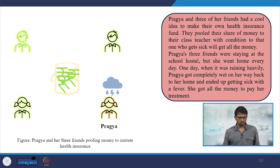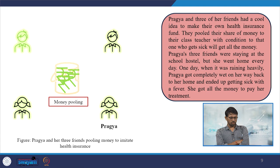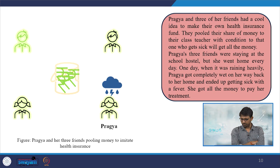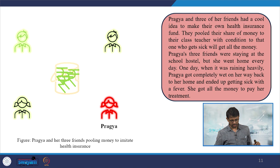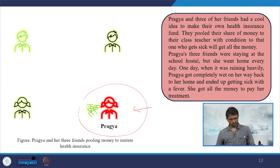Pragya's three friends were staying at the school hostel, but she went home every day. One day when it was raining heavily, Pragya got completely wet on her way home and ended up getting sick with a fever. She got all the money to pay for her treatment due to the pooling of funds. This interactive example explains how pooling really helps someone who is exposed to some form of risk. There are four friends including Pragya who pooled their money, and when Pragya got sick, all the amount was shared with her.